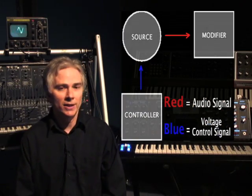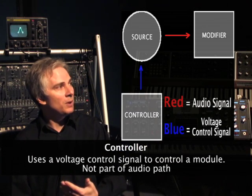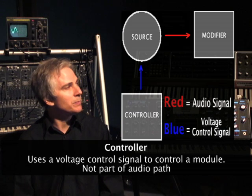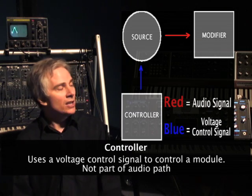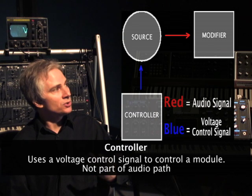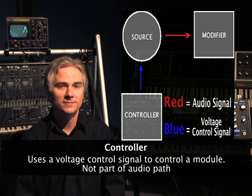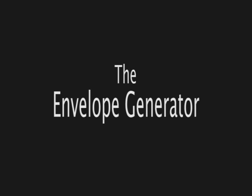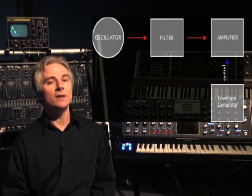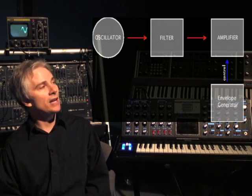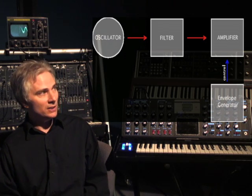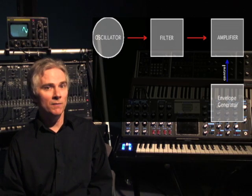First, I would like to review the controller. Let's take a look at this diagram. Notice in this diagram, a controller is connected to another module, such as a source in this example, with a voltage control signal. So it will control another module with a voltage control signal. In this next diagram, you'll see that we have an oscillator, filter, and amplifier — the audio signal path — and then we have a controller that's controlling the amplifier. This controller is an envelope generator.